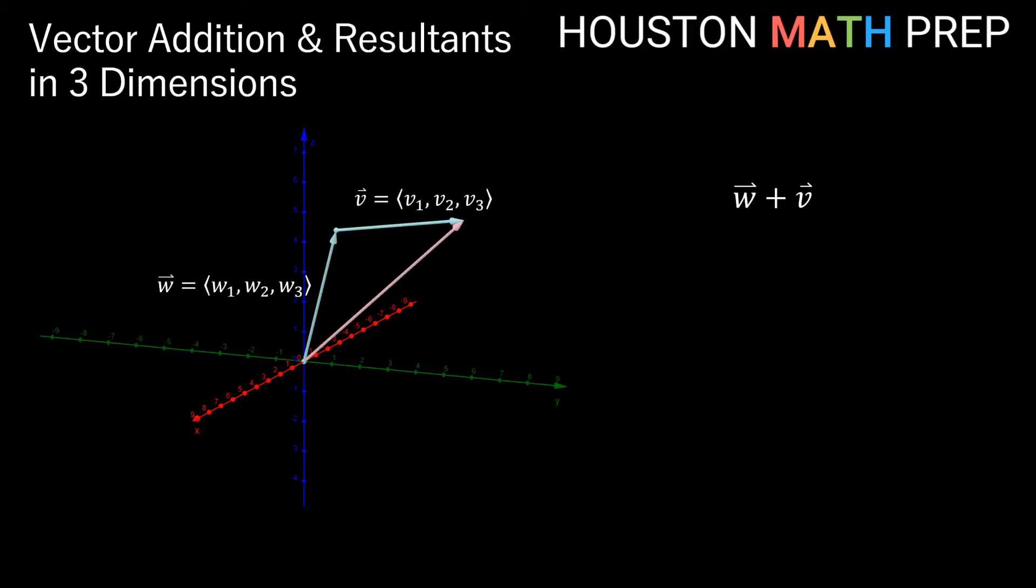We can picture what the resultant will look like, just like before, first traveling vector W and then traveling vector V. This is our resultant vector here, W plus V.